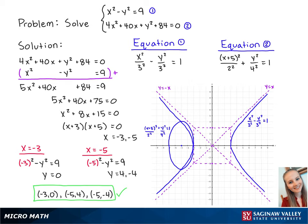Now we can see our solution points at negative 3, 0, negative 5, 4, and negative 5, negative 4. And this completes the problem.